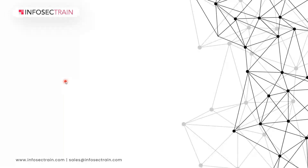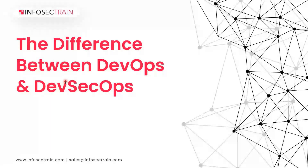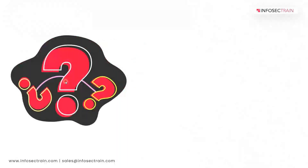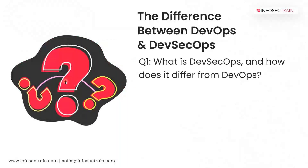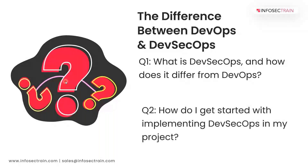We need to look at the difference between DevOps and DevSecOps — what exactly we are doing in terms of DevOps or DevSecOps, what exactly it means. There are two key questions here: what is DevSecOps and how does it differ from DevOps, and how do I get started with implementing DevSecOps in my project?